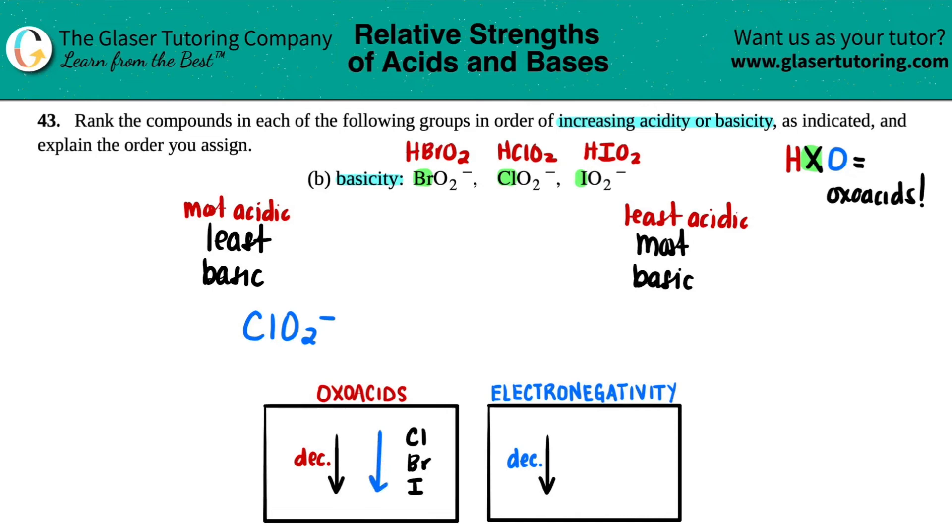As you're going down, you become least acidic, and that's over here—least acidic, aka most basic. That's the iodine one, and the guy in the middle is the bromine one.